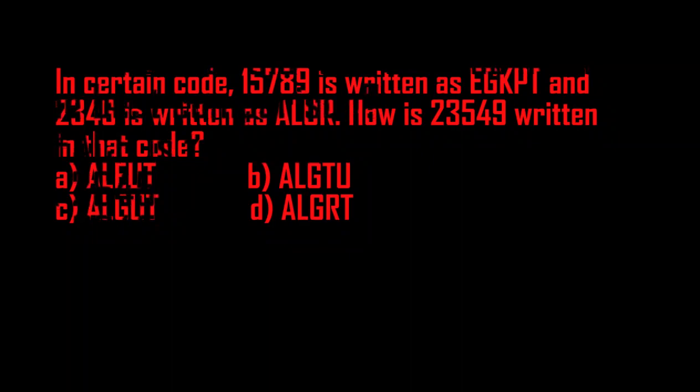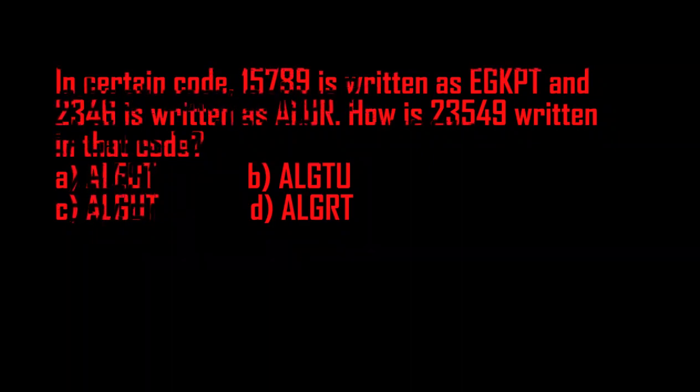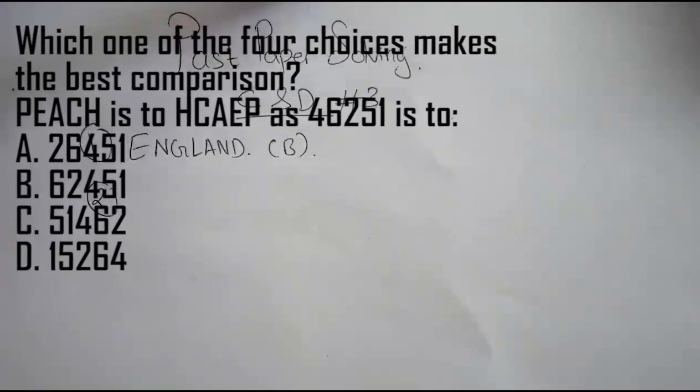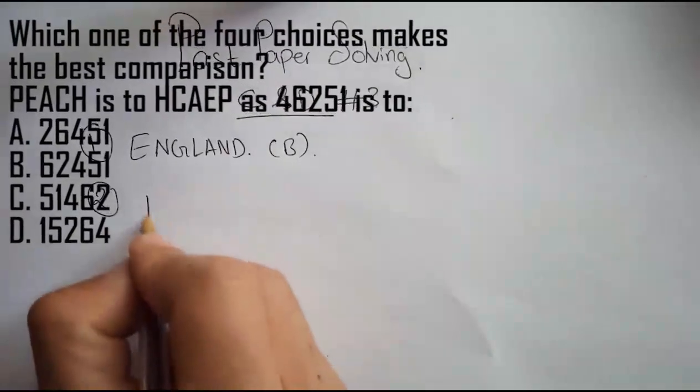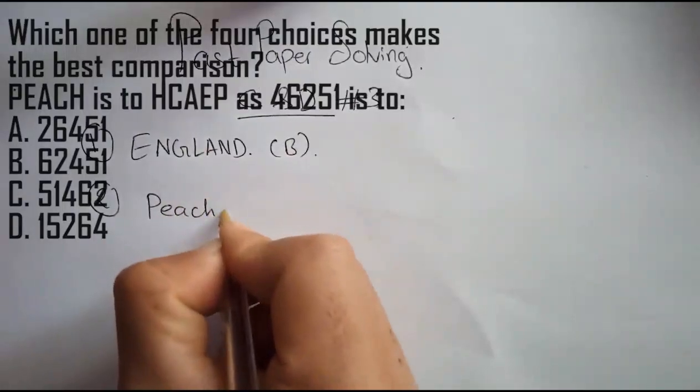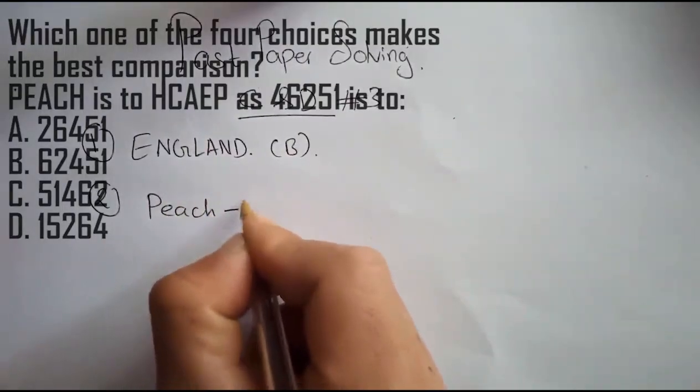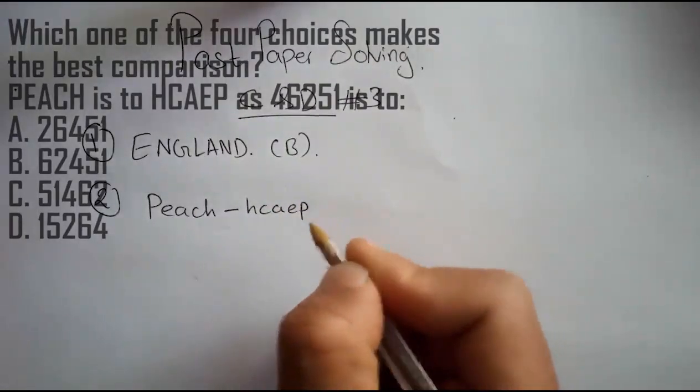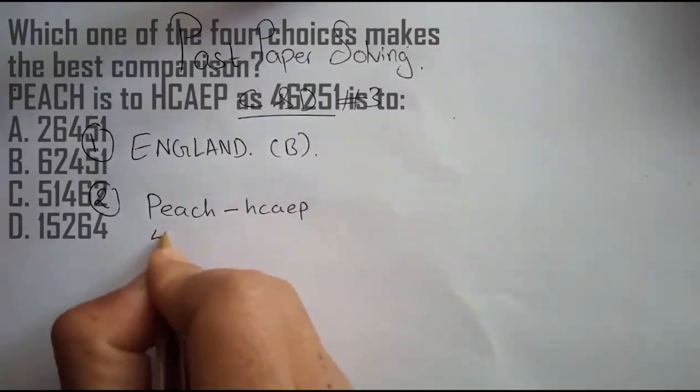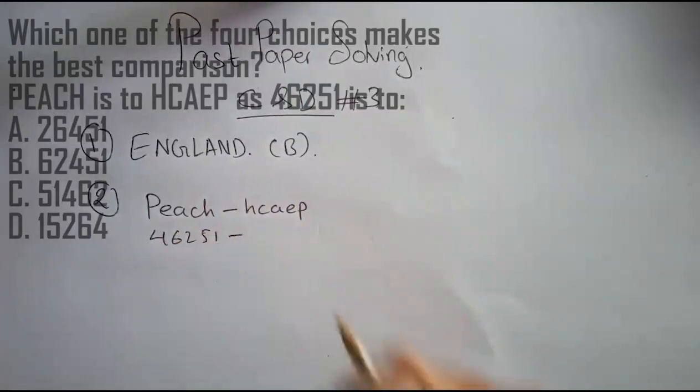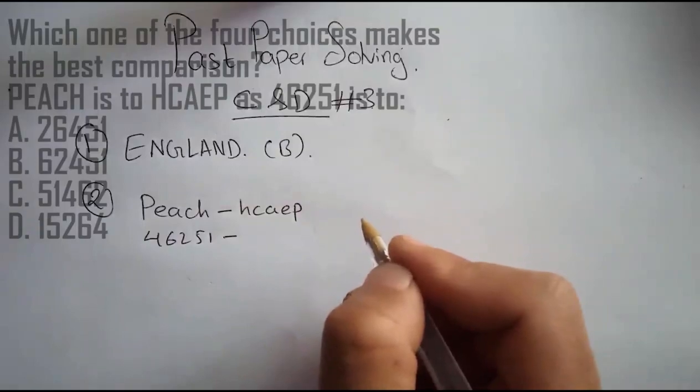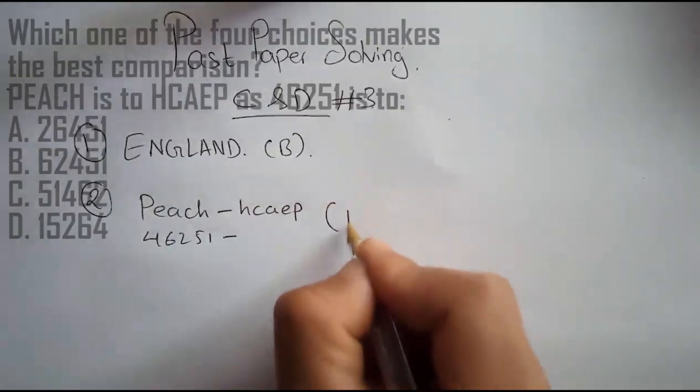Let's go on with question number two. Which one of the four choices makes the best comparison? The word PEACH, written as P-E-A-C-H, becomes H-C-A-E-P. This is the first type that we studied - type one, the reverse.